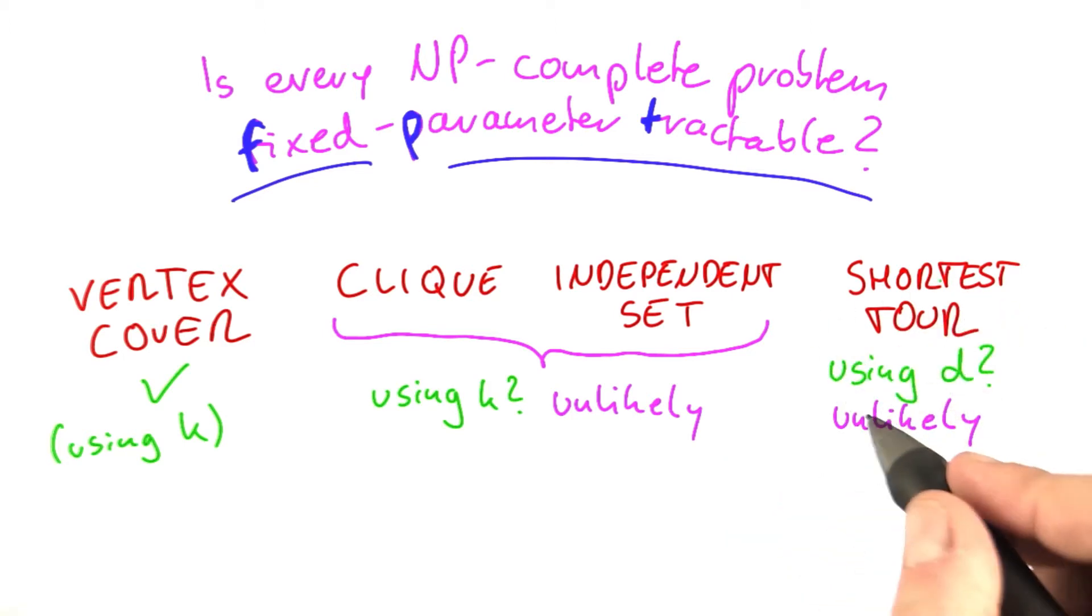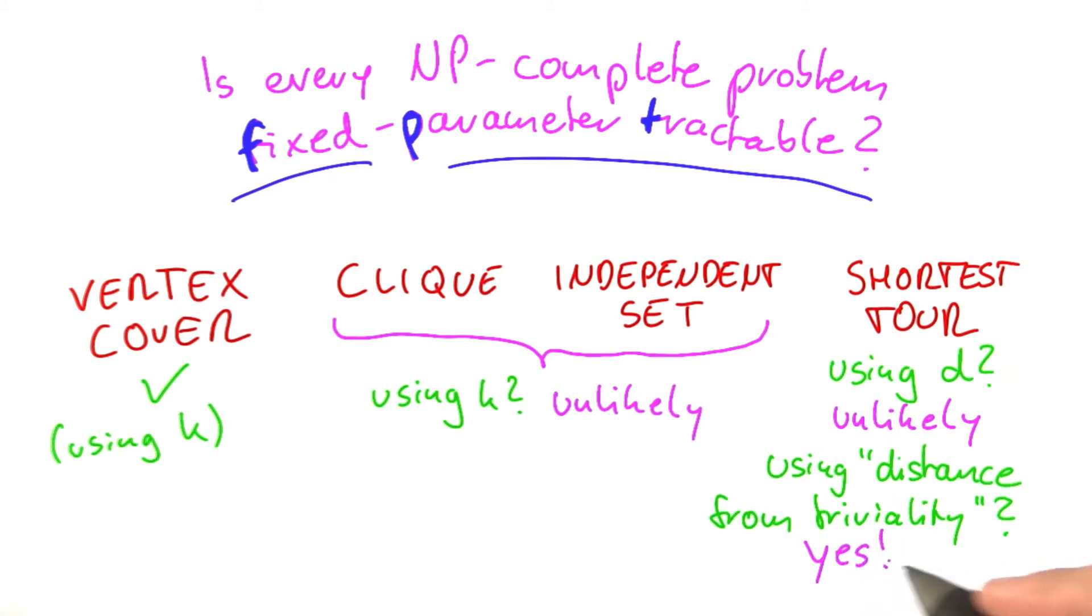But for shortest tour, another parameter has been investigated that actually seems rather promising. And that parameter is called using distance from triviality. And there it turns out shortest tour actually could be fixed parameter tractable.